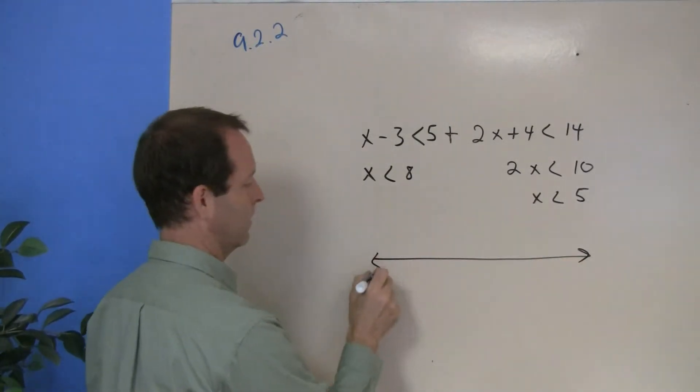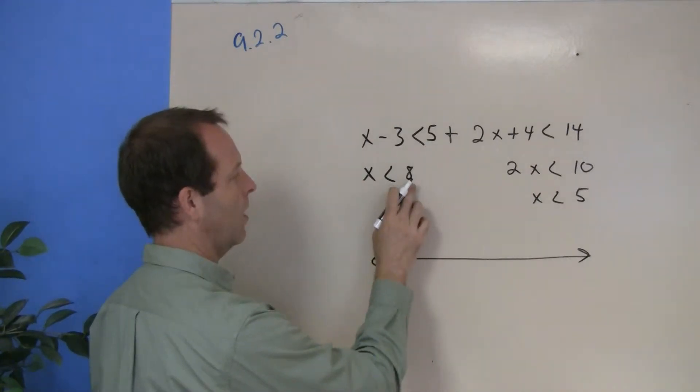Sometimes it's a good idea to graph them out. So one of them says all values less than 8.